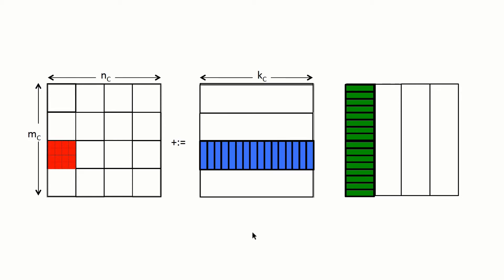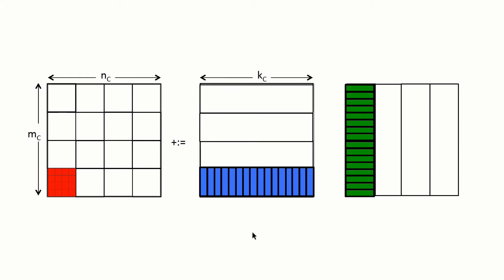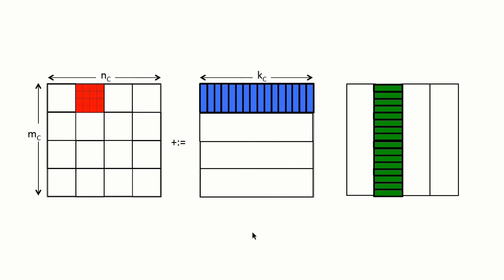Now, once we're done updating all of the micro tiles in the first column of matrix C, we notice that we don't reuse the micro panel of B again.